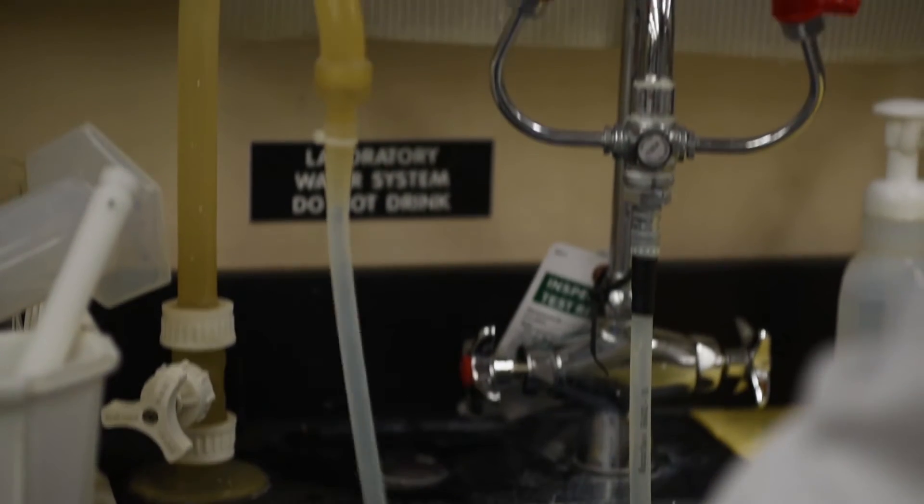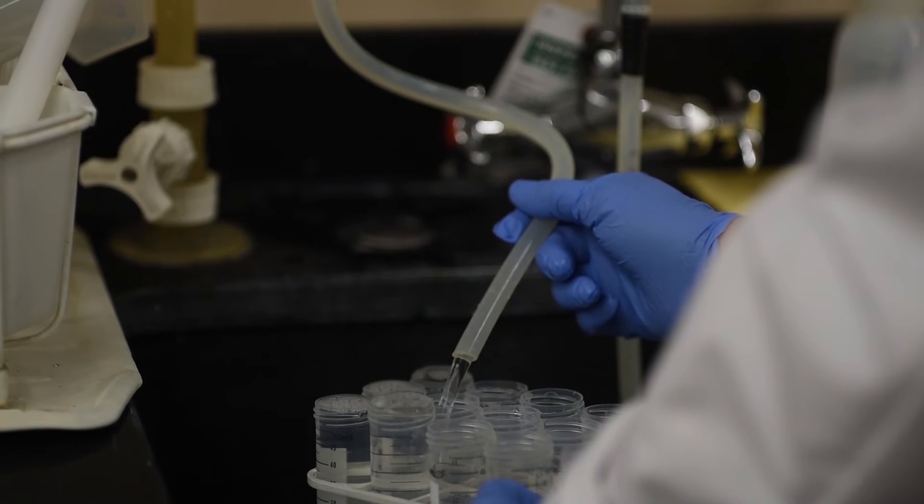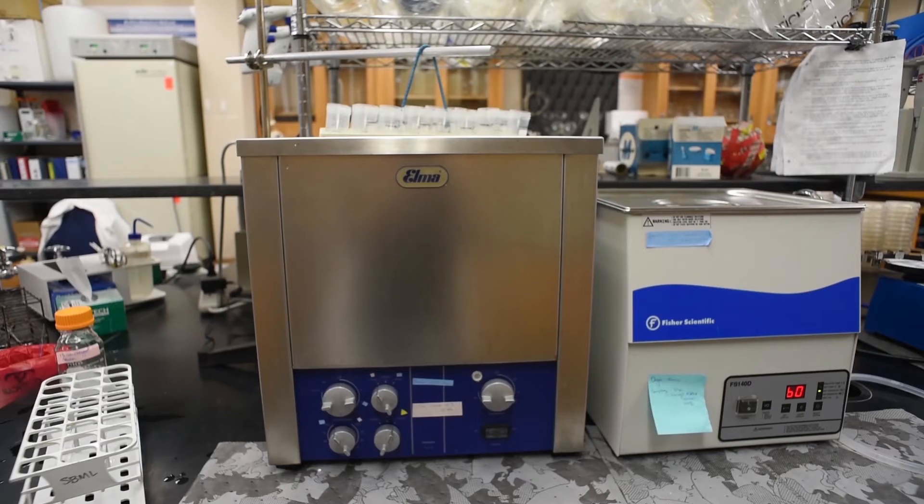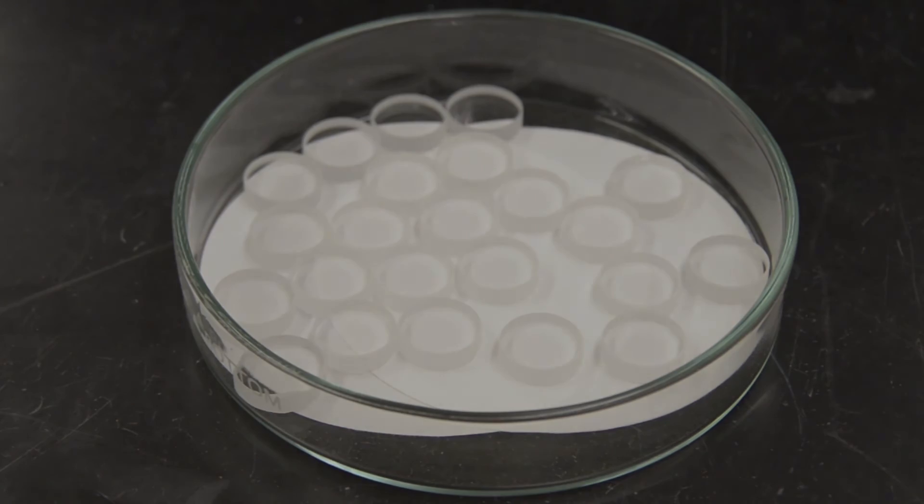Rinse the coupons thoroughly with reagent grade water until no detergent bubbles remain and sonicate again for 5 minutes. Pour the water from the vials. Spread the coupons out on absorbent paper and air dry.